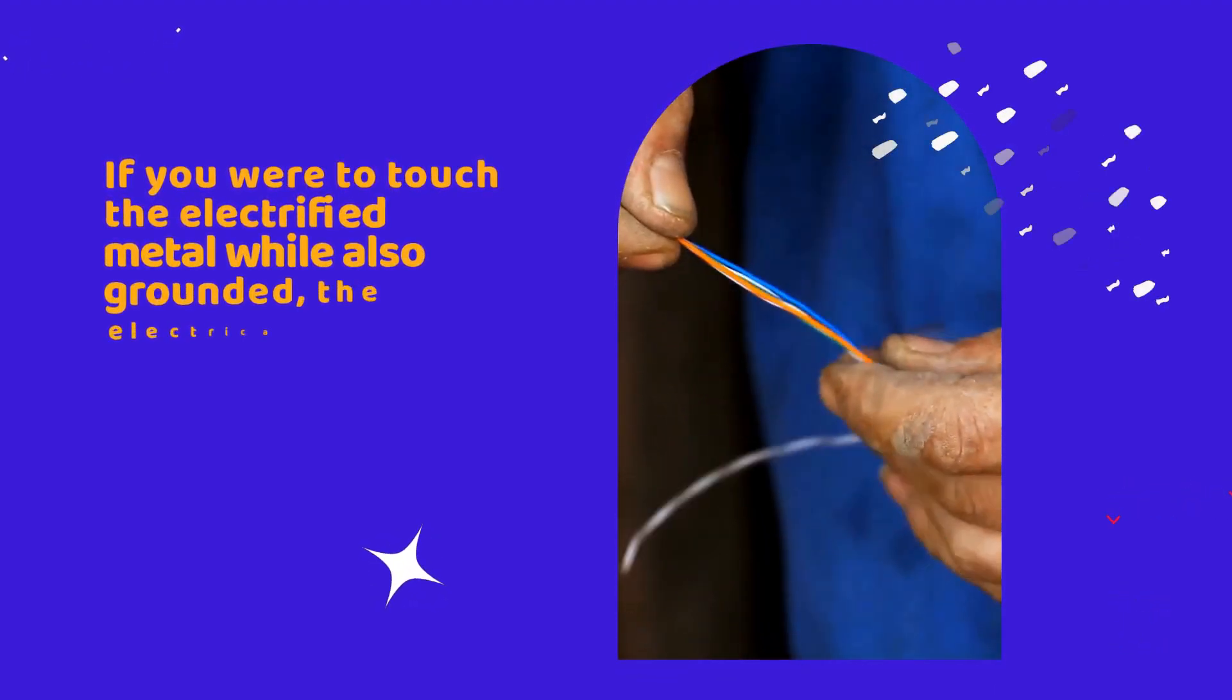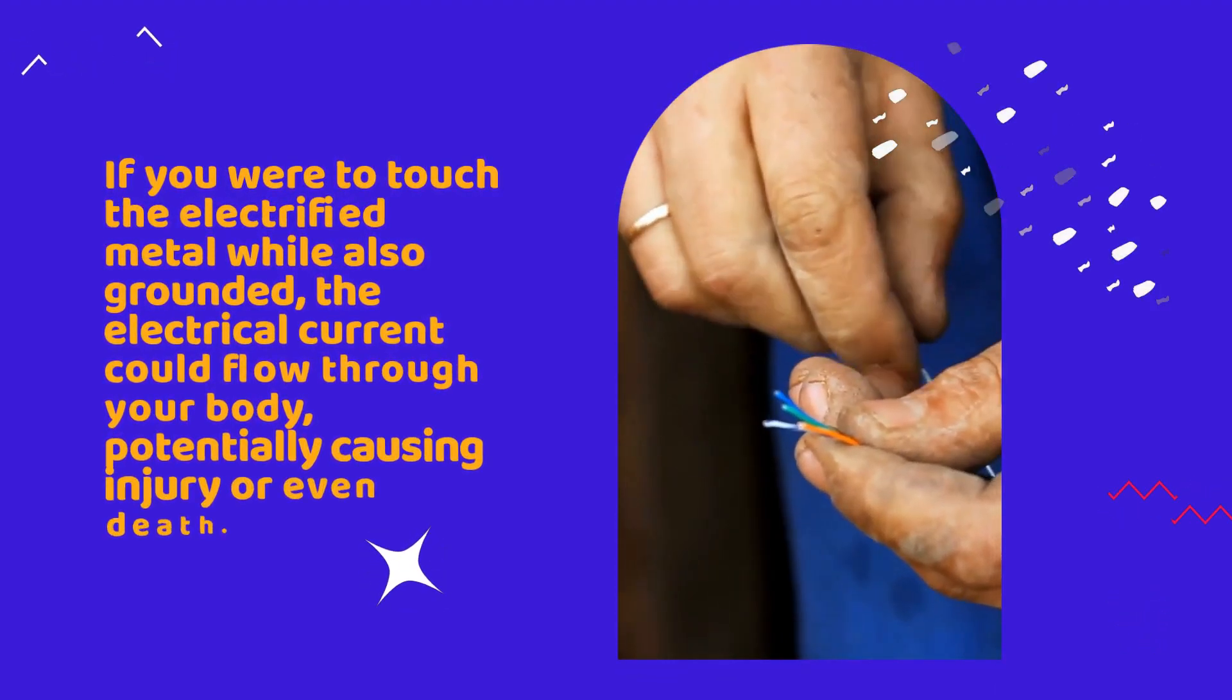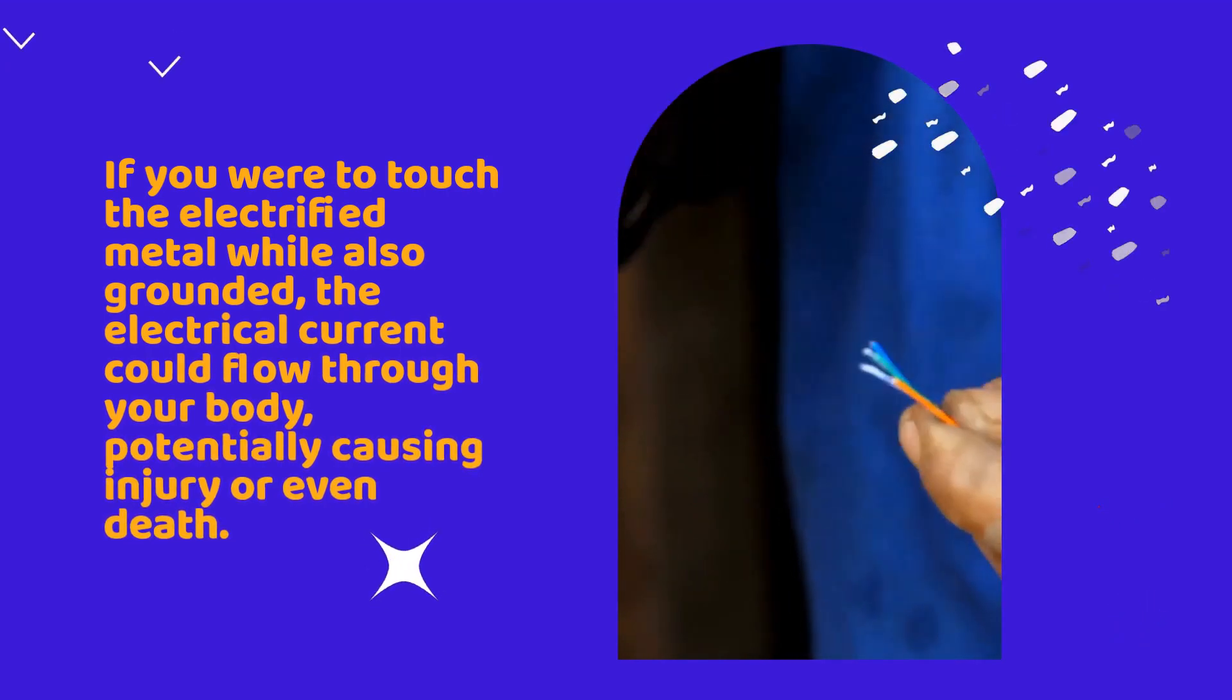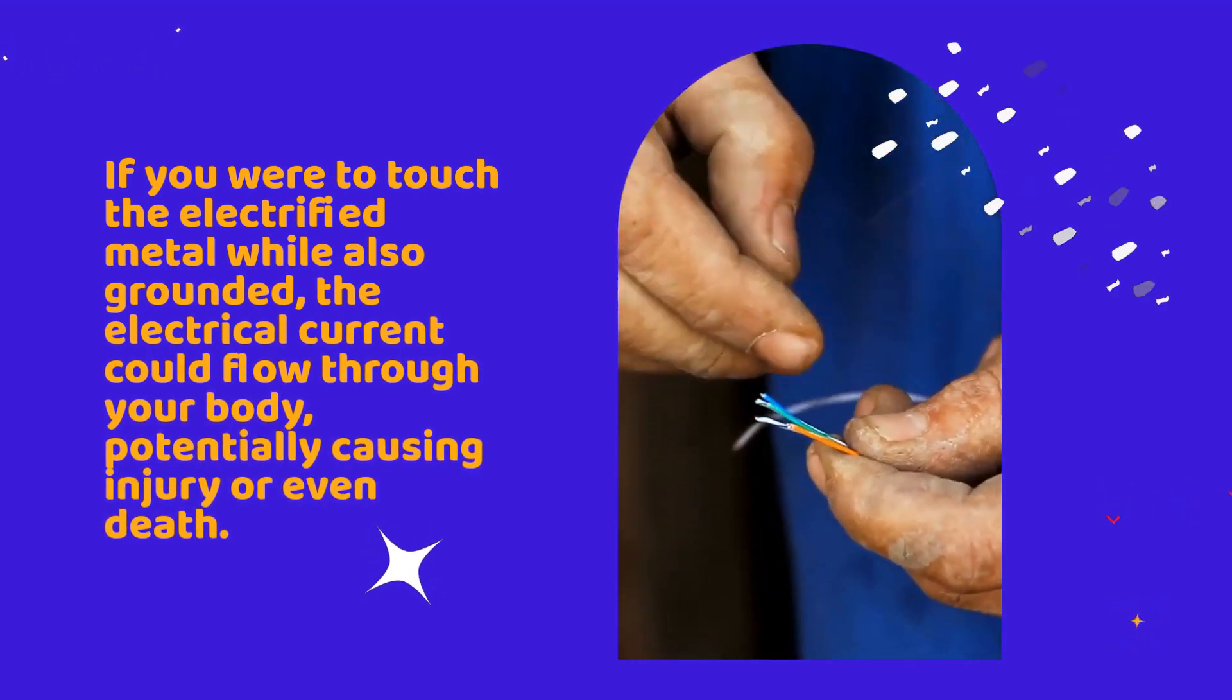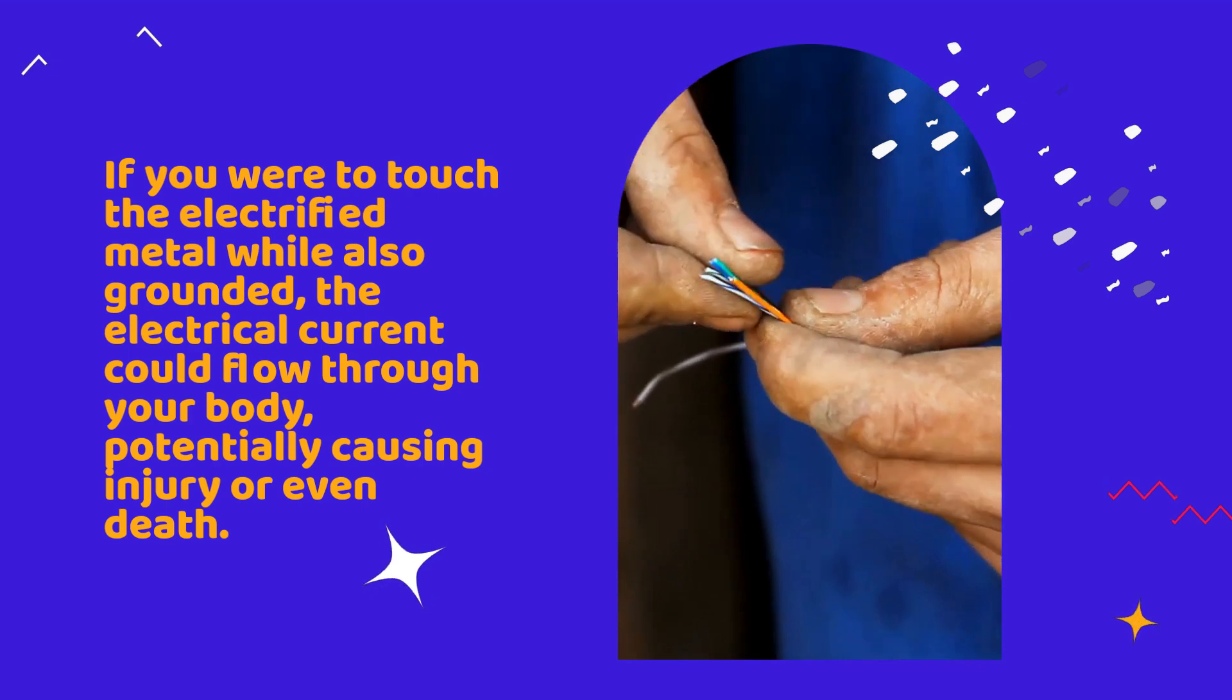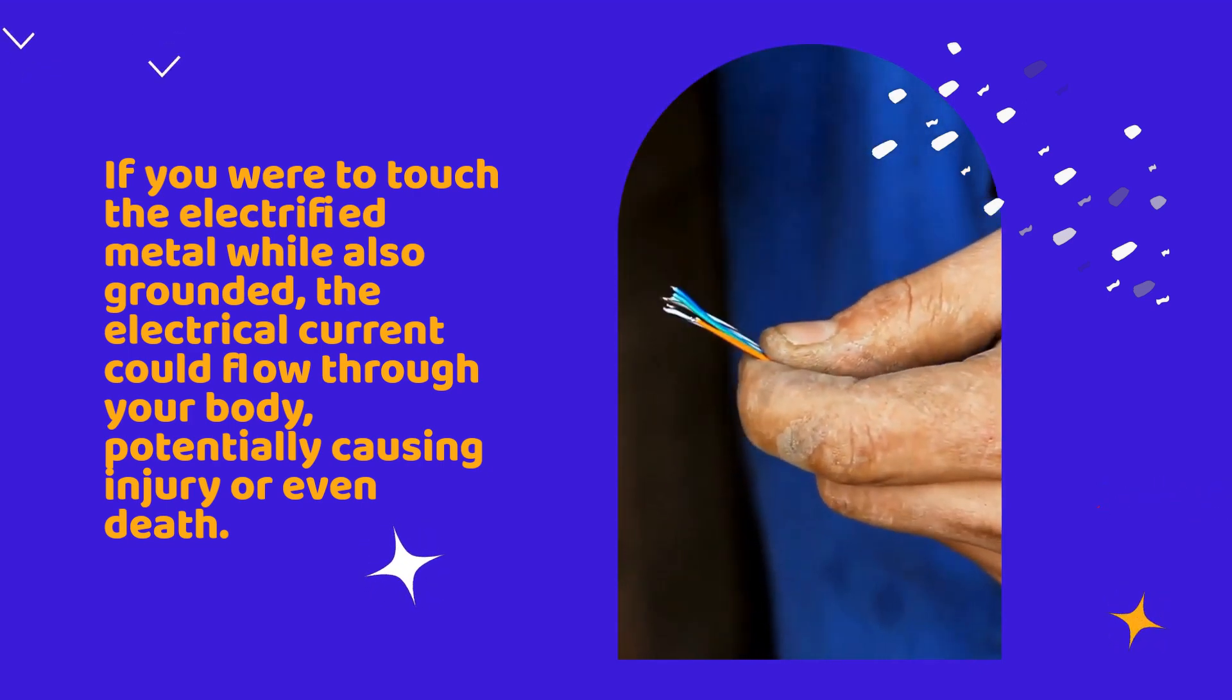This is crucial in appliances that have metal components, as the metal can become electrified if there's a fault in the wiring. If you were to touch the electrified metal while also grounded, the electrical current could flow through your body, potentially causing injury or even death.